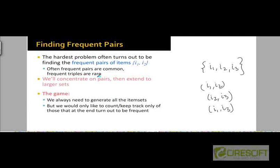We are going to assume that frequent triples should be rare, because if they are not rare, we will have a huge number of frequent item sets, since the number of frequent pairs will be very large. That's going to be a problem for a supermarket store, because if there is a huge number of frequent item sets, it becomes very difficult to act upon them.